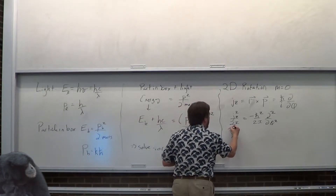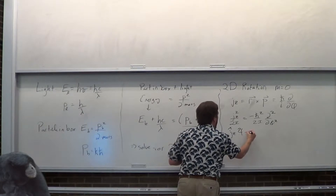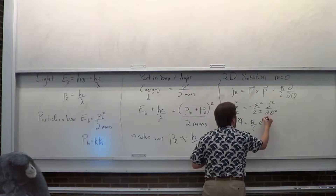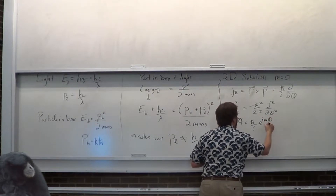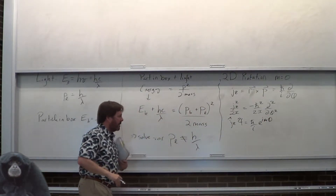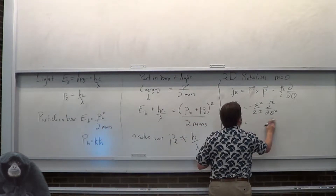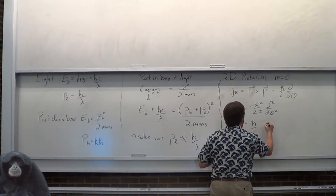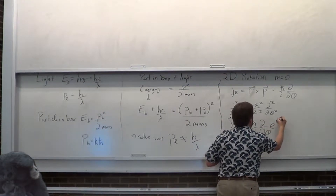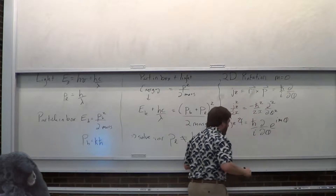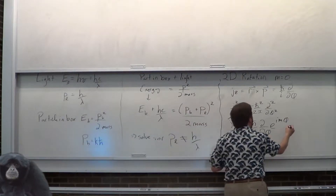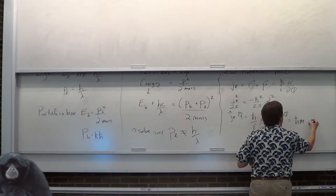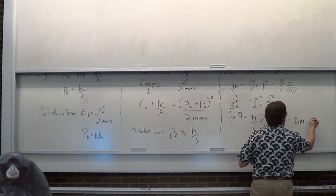Let's apply J_z to the wave function we know. Remember that M can be negative, which is where our left-handed curves come from. When we apply J_z, we get something that looks very similar to the free wave: we get hbar·M times the wave function. That's J_z acting on the wave function.